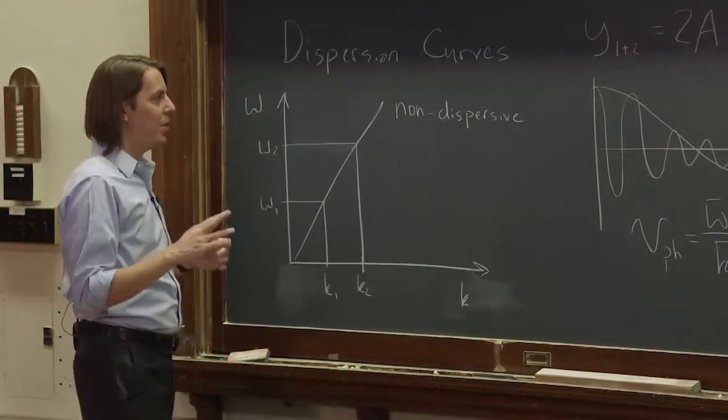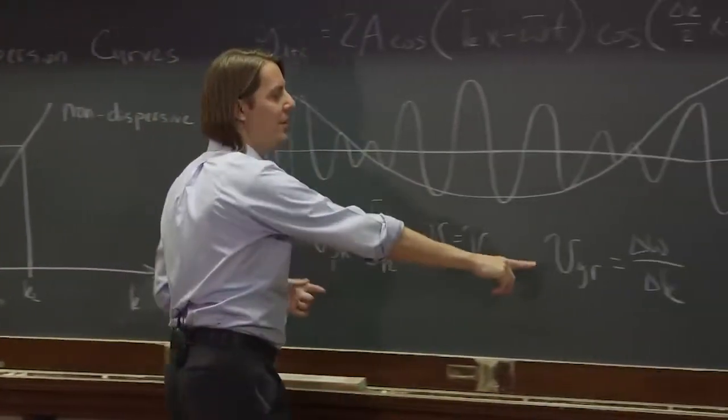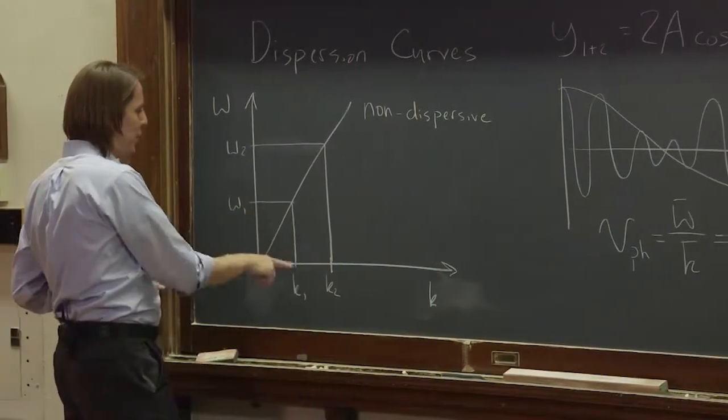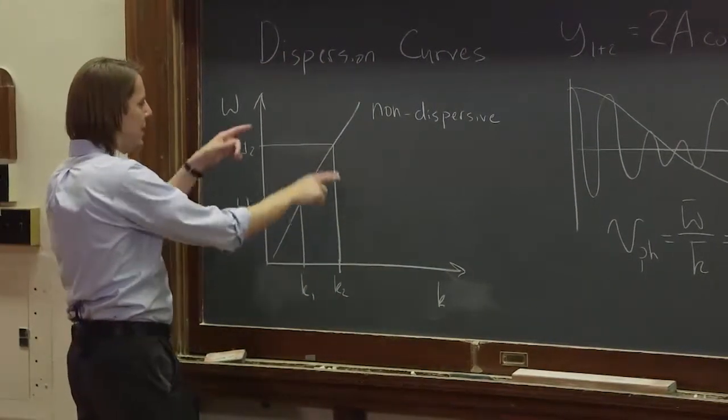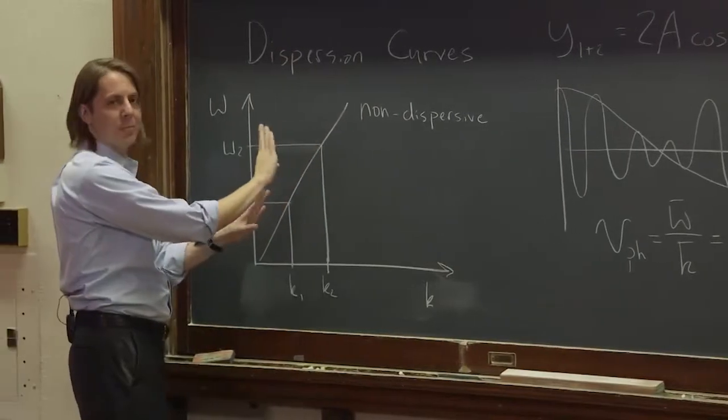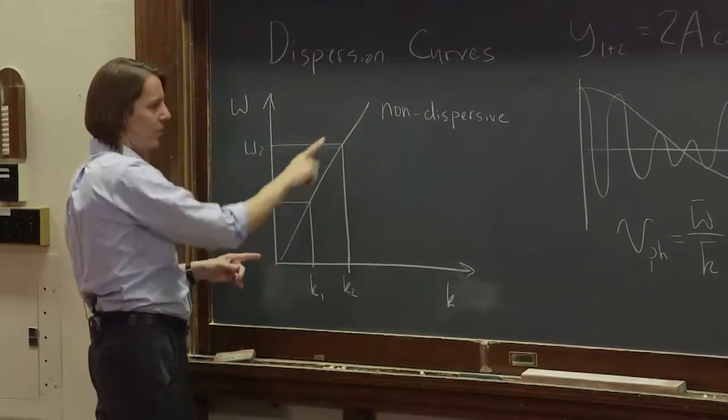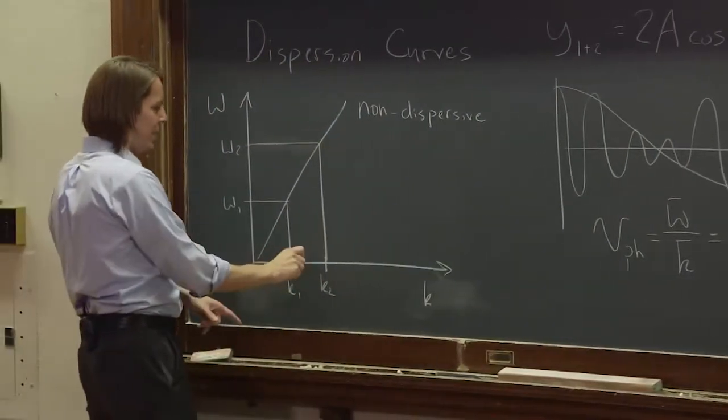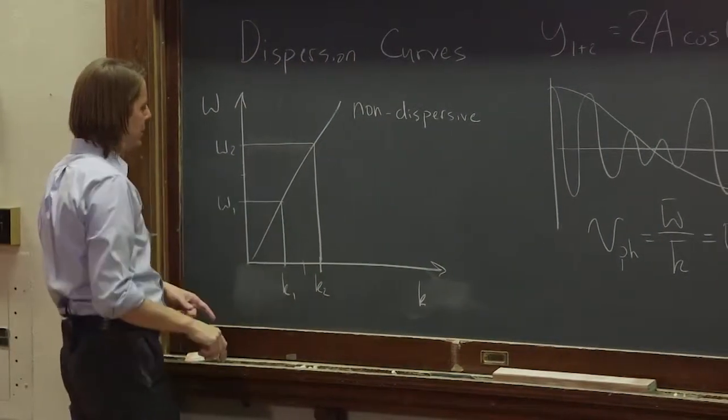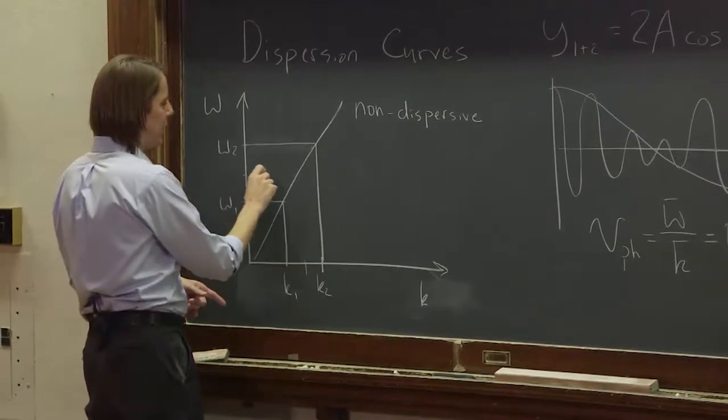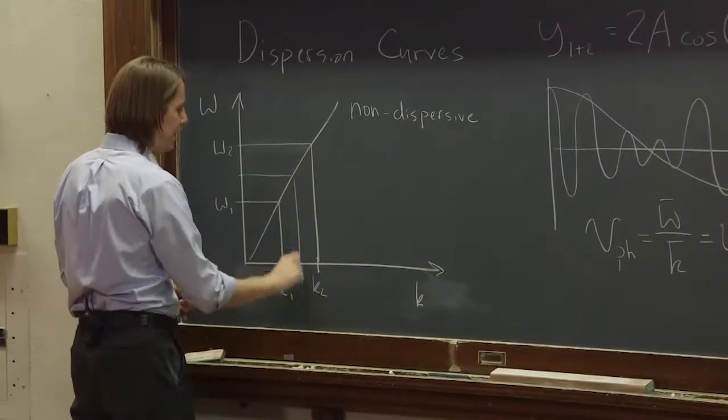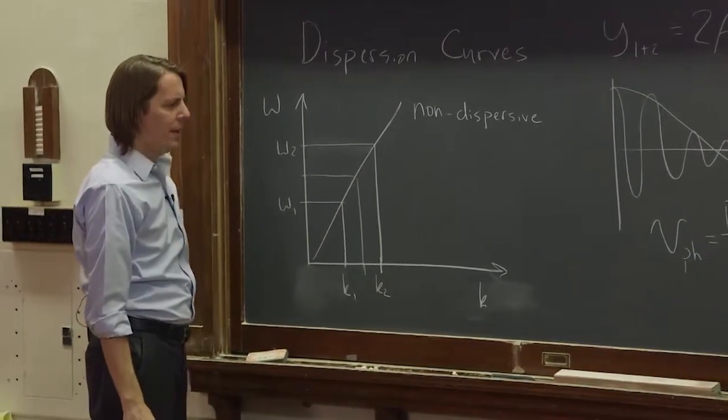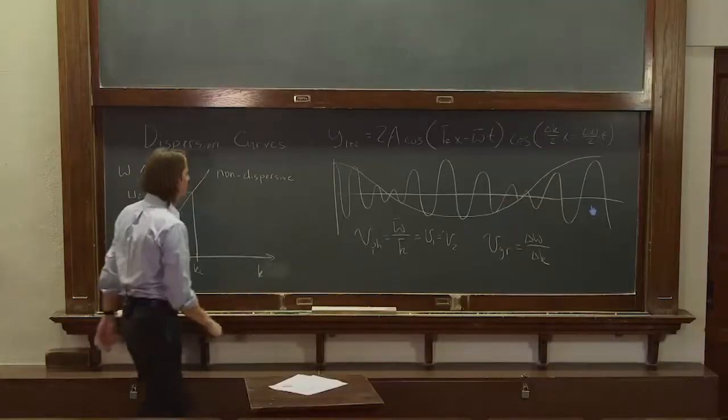Now, in the case of a non-dispersive medium, these velocities end up being the same. Omega 1, k1. Omega 2, k2. V1, v2 are the same. We've already determined that because this is a line. We could look at the average of the two. So the average of k1 and k2 would be in the middle, and the average of omega 1 and omega 2 would be in the middle. And that's going to give you the same velocity because it's going against a flat line if you just work it out. And what about delta omega and delta k?